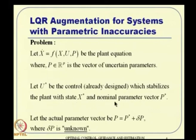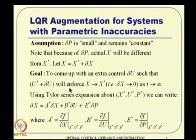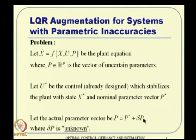We assume δp is small - not large uncertainty like 50% or 100%. We are talking about small uncertainty, perhaps plus or minus 5-10% inaccuracy. Large uncertainties are a different class of problem - people call it reconfigurable control. For example, if an aircraft has battle damage and half the wing is gone, that is large uncertainty. What we discuss here is parametric inaccuracy: wind tunnel data coefficients computed through polynomial fits can be inaccurate by 5-20%, and mass or moment of inertia cannot vary much more than 5-10%.